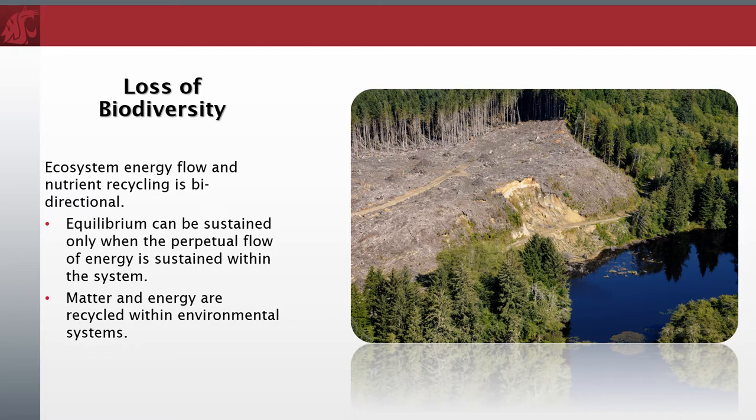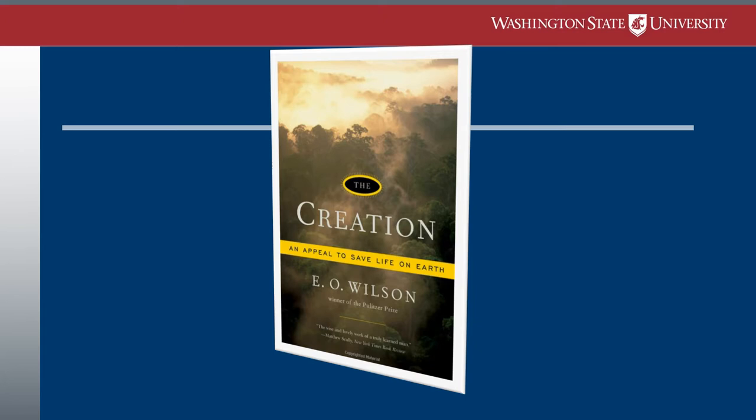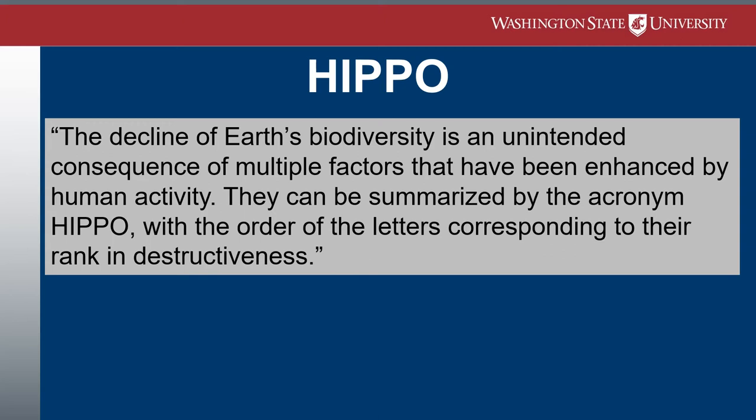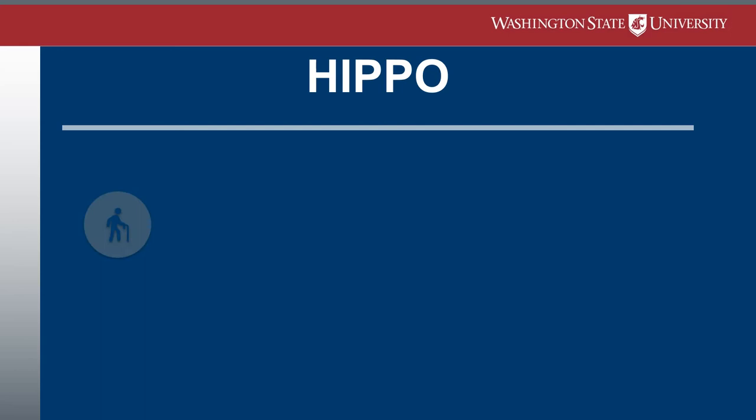Matter and energy are recycled within the environmental systems. Biologist and naturalist Edward Wilson wrote, in "The Creation: An Appeal to Save Life on Earth," that "the decline of Earth's biodiversity is an unintended consequence of multiple factors that have been enhanced by human activity. They can be summarized by the acronym HIPPO, with the order of the letters corresponding to their rank in destructiveness."